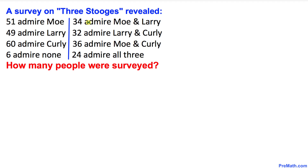A survey was conducted on the three stooges and it revealed 51 admire Mo, 49 admire Larry, 60 admire Curly, and 6 admire none of the above. Moreover, 34 admire Mo and Larry, 32 admire Larry and Curly, 36 admire Mo and Curly, and 24 admire all of the above. The question is: how many people were surveyed?